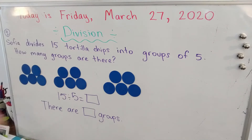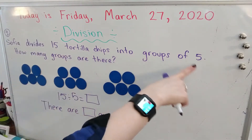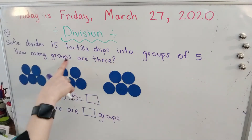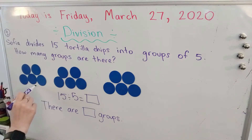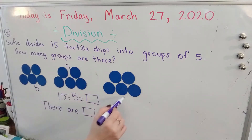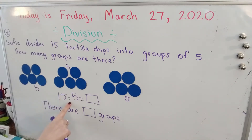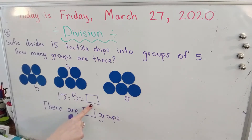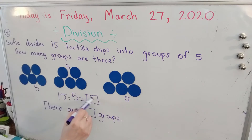Number two. Sophia divides 15 tortilla chips into groups of five. How many groups are there? So here we have groups of five, and in total we have 15. So we start with our 15 as our total, divided by the number in each group, which is five. We can figure out how many groups there are — group one, group two, group three. There are three groups.